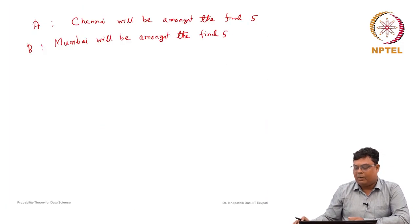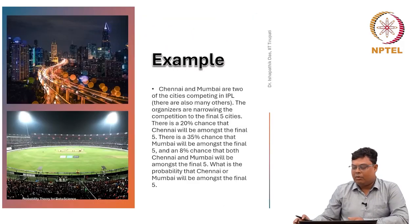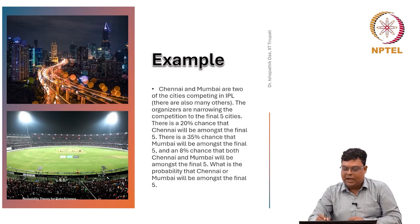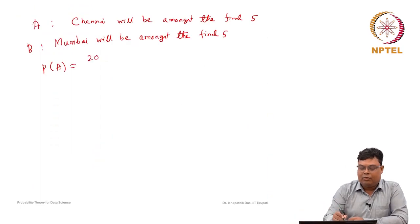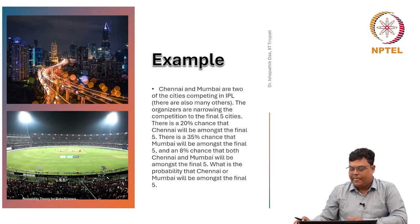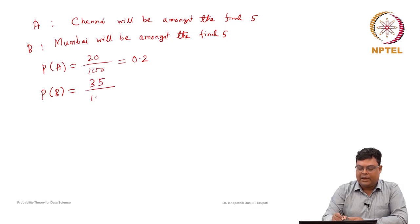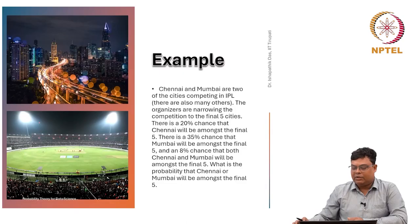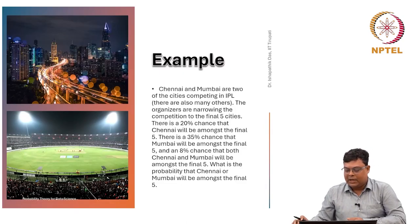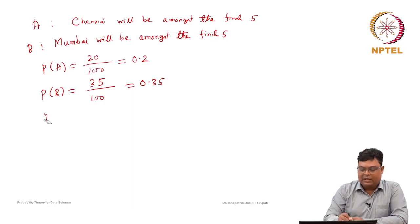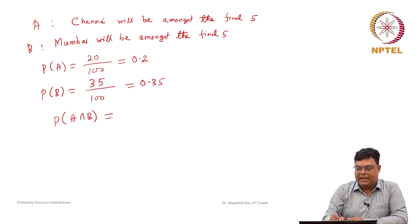According to the given problem, the probability of A — the chance that Chennai will be amongst the final five — is 20 percent, so this is 0.2. The probability of B, the chance for Mumbai, is 35 percent, so this is 0.35. And it is given that an 8 percent chance that both Chennai and Mumbai will be amongst the final five — this is the intersection — so probability of A intersection B is 0.08.